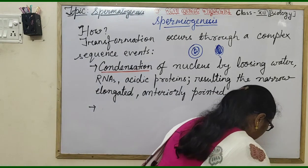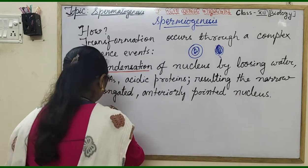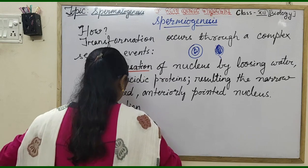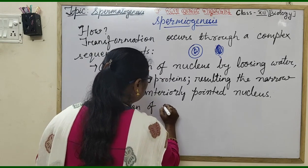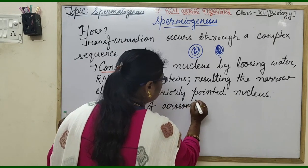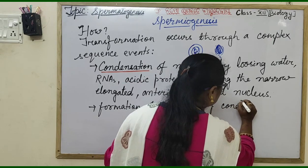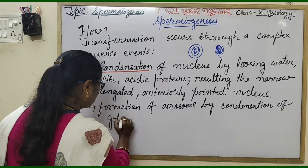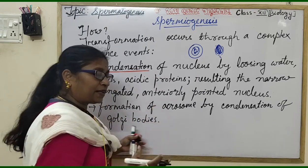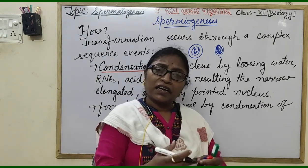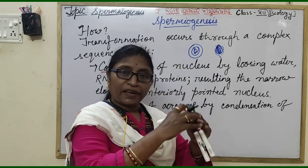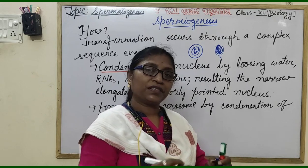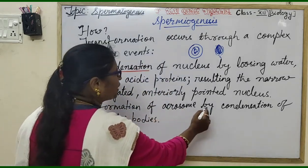The next event is the formation of the acrosome by condensation of Golgi bodies. The Golgi bodies come together and condense to form a structure called the acrosome, which remains as a cap over the nucleus, covering two-thirds of the nucleus.